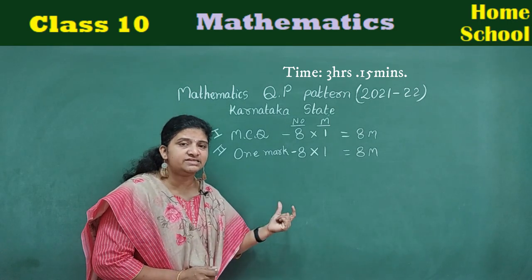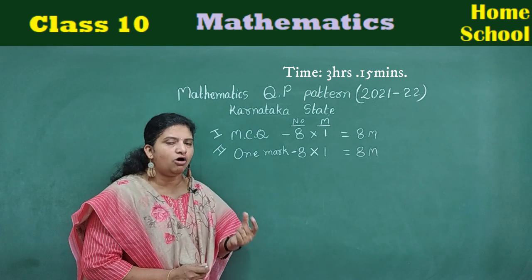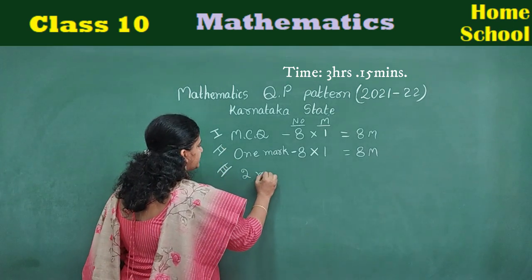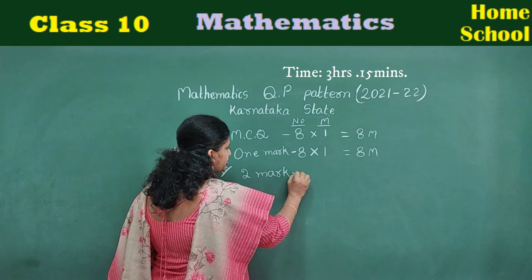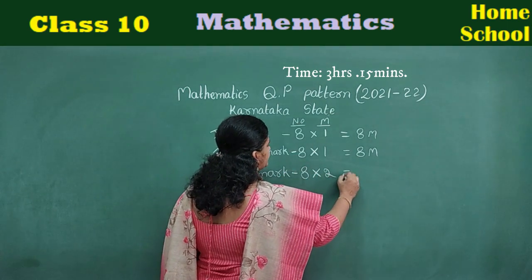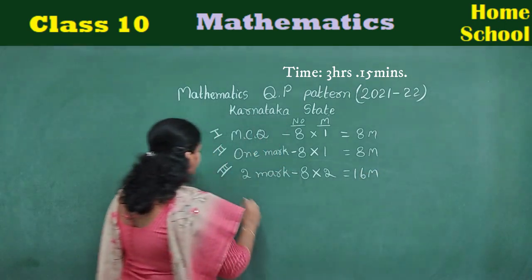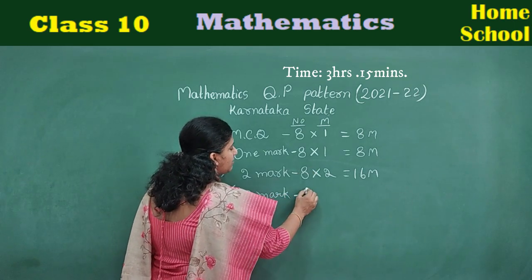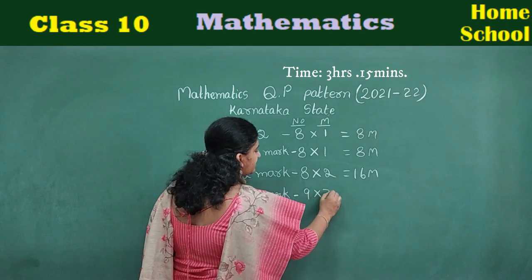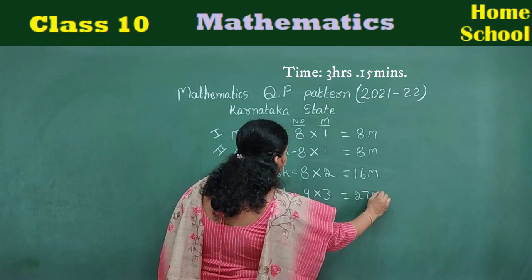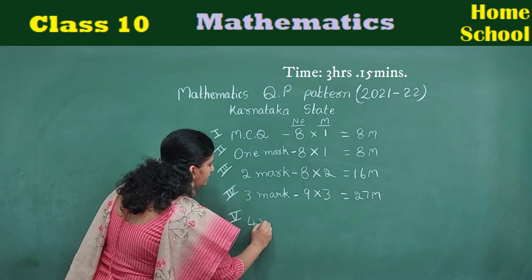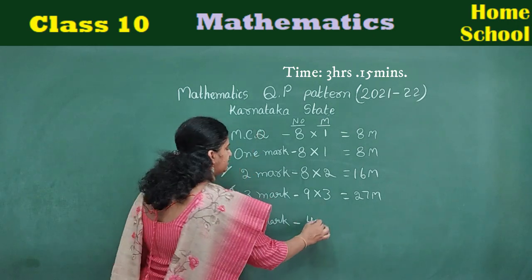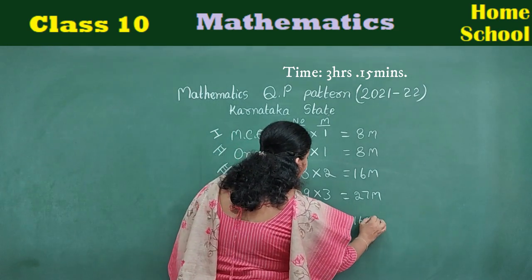Second Main questions can be answered either by a single line or one word. Third Main: 2-mark questions — 8 questions, each carries 2 marks, total 16 marks. Fourth Main: 3-mark questions — 9 questions, each carries 3 marks, total 27 marks. Fifth Main: 4-mark questions — 4 questions, each carries 4 marks, total 16 marks.